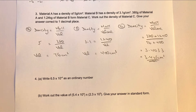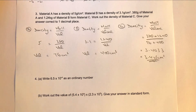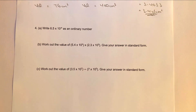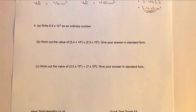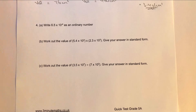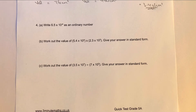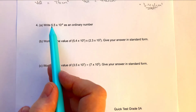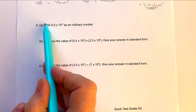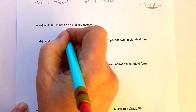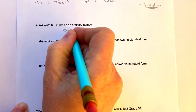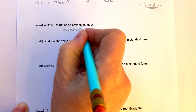Let's move on to question number four. Please do stop the video, have a go at these questions and then compare your solutions. So a very popular standard form type question here. 6.5 times 10 to the power of minus 4 — the decimal point has moved four places, so it becomes 0.00065.